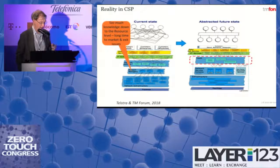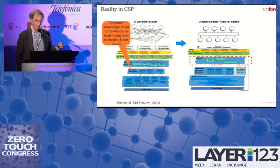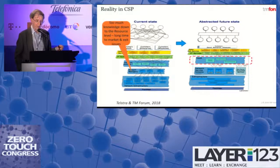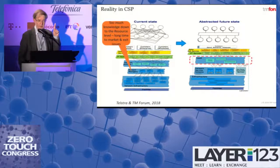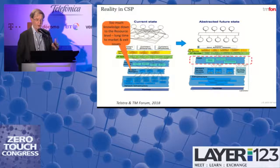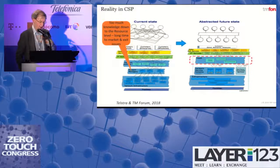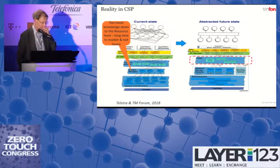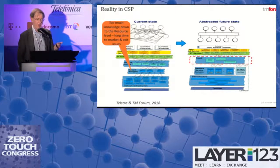The key point Telstra made is that on the left-hand side, IT assets in a service provider are very tightly integrated and coupled with the networking assets. The proposal is to move to a network-as-a-service model on the right-hand side, which abstracts a lot of this detail away from current OSS and BSS. The implication is that networking departments need to be more software-literate and build up their software skills.